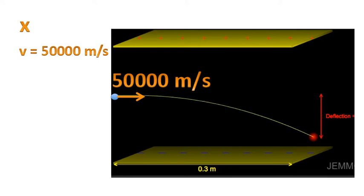So let's work on the x-direction first. We have the initial speed in the x-direction, 50,000 meters per second. And we know that's not going to change. We know the distance, 0.3 meters from the simulation. And we could use a simple formula, speed equals distance over time.